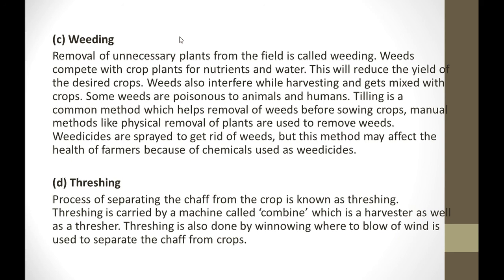Next is threshing. Threshing is the process of separating the grain from the chaff. Threshing is carried out by a machine called a combine, where the harvester and thresher are combined — the harvester cuts the crop and the thresher separates the grains. Threshing is also done by winnowing, where a blow of wind is used to separate the chaff from the crop.